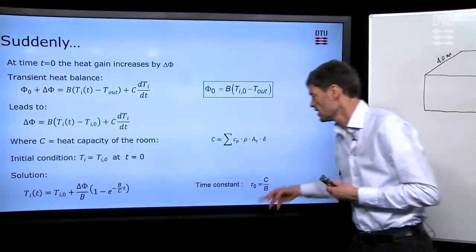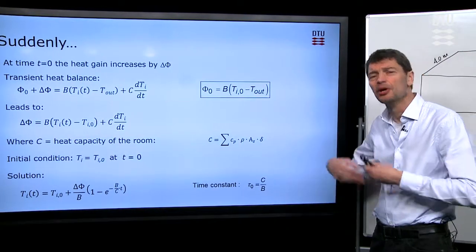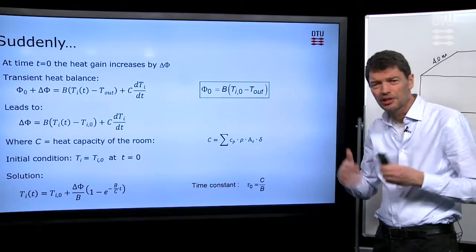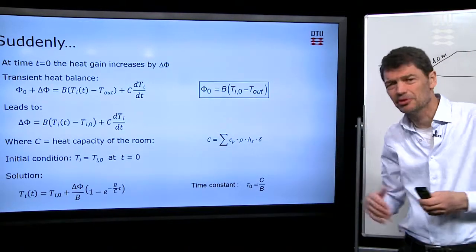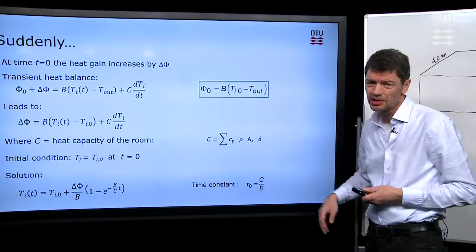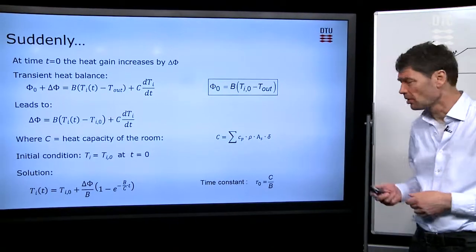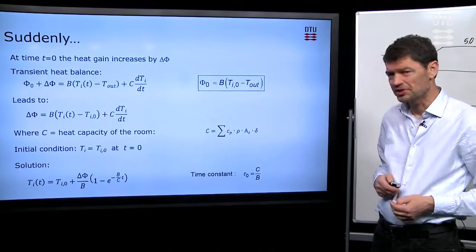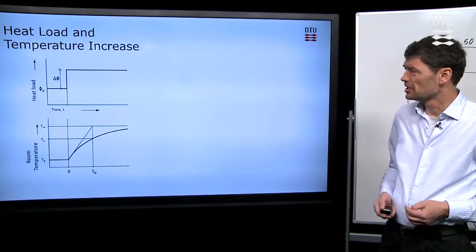One over that coefficient, that we call the time constant, which explains how slow it is. A long time constant, it takes long time to change things. That goes with large heat capacity or a small coupling coefficient in our equation.